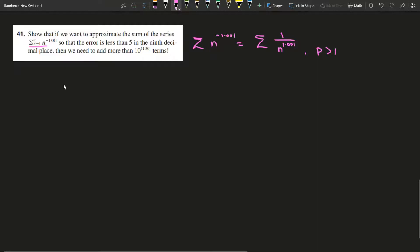To find the error, to make sure that approximation is within 5 in the ninth decimal place means that the integral from n to infinity of x to negative 1.001 dx should be less than 5 times 10 to the negative 9. That's exactly what this line means.